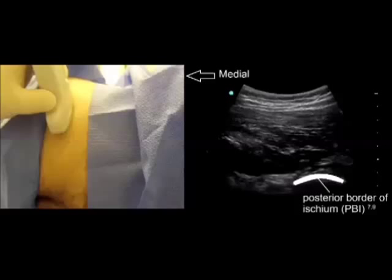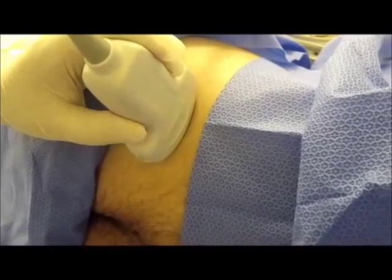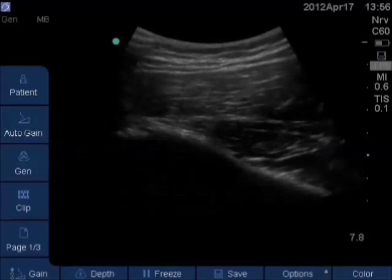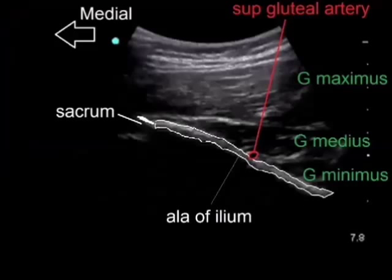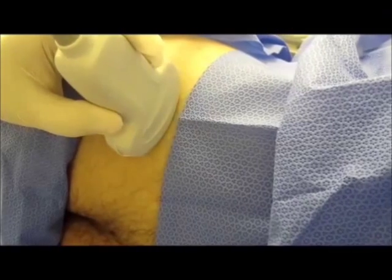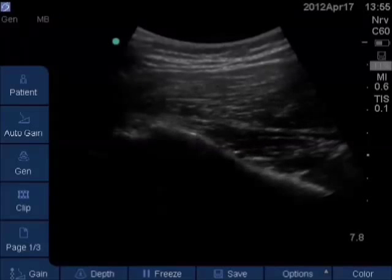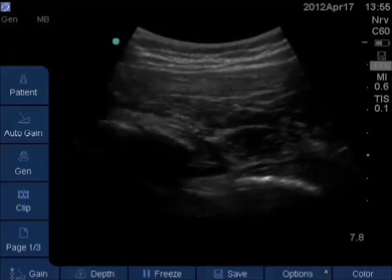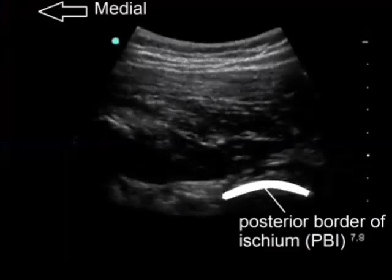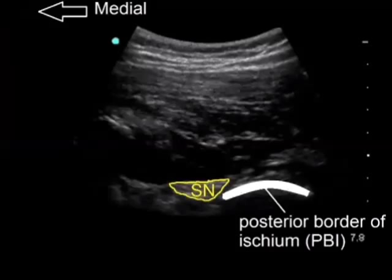To identify the posterior border of the ischium, place the ultrasound probe on the horizontal plane about 8 cm lateral to the upper end of the gluteal cleft. At this level, the posterior border of the ischium will usually be identified — it appears as a characteristic curved hyperechoic structure. If it is not identified at this level, slide the ultrasound probe in the cephalic direction to identify the ilium, which appears as a straight oblique bone. Follow the ilium caudally until the posterior border of the ischium can be identified.